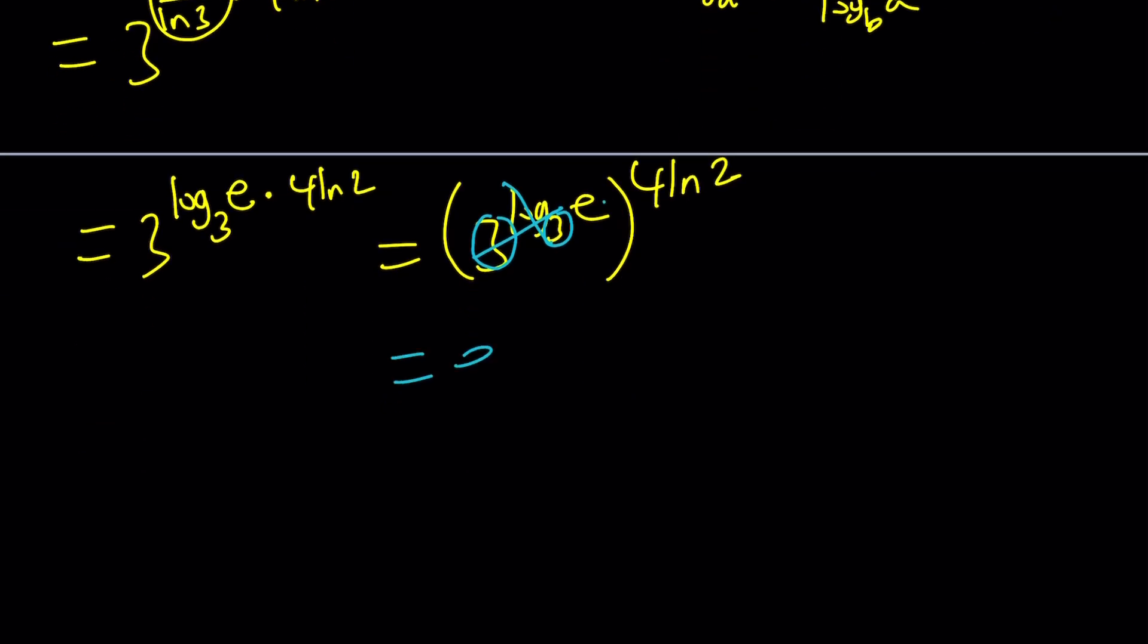We have this nice property when the bases 3 and the 3 are the same. They kind of cancel out, leaving us with e. This gives us e to the power 4 ln 2.